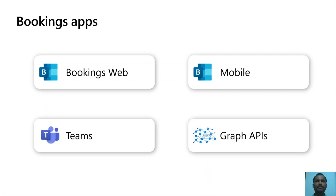Bookings gives you the best experience wherever you prefer to log in from. It is available as a standalone web app within Microsoft 365 and also as an app in Teams. It is also available on iOS and Android devices. Bookings API in Microsoft Graph provides programmatic access to our capabilities. The Graph APIs are currently in beta.